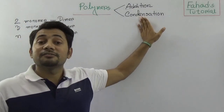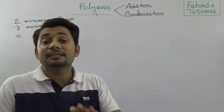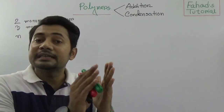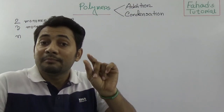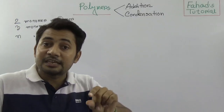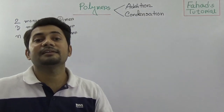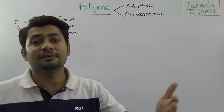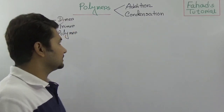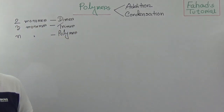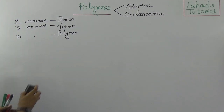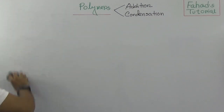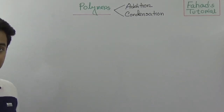In the case of condensation reaction or condensation polymer, what is happening is that the monomers are joining each other, but before joining they release some other molecule — like a water molecule or even a carbon dioxide molecule. Addition polymers are those where the monomers are directly connected.